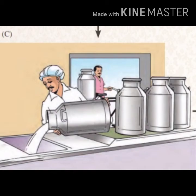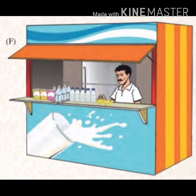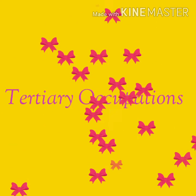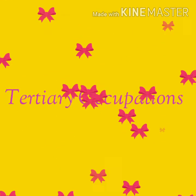Now we are going to start with page number 62. Look at pictures C, D, and F. You will see milk collection and sale of milk, transport of milk, and sale of milk products respectively. All these activities are related to the products of primary and secondary occupation. Many times these occupations provide complementary services to the other two occupations. Such occupations are called tertiary occupations. Do you know what is the meaning of complementary services?